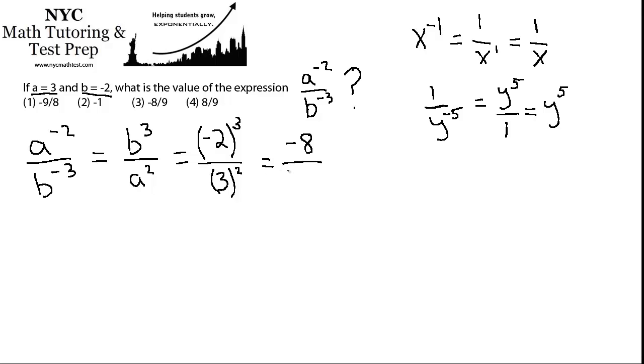And the denominator is 3 squared, so that's 9. And that's it. So that is choice 3. And we are done.